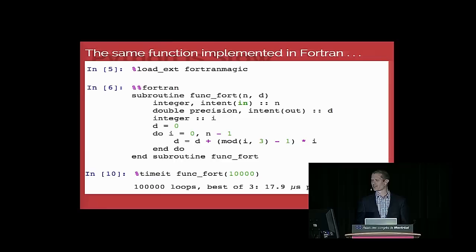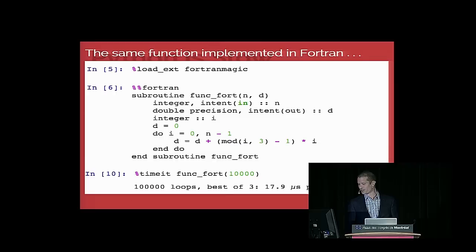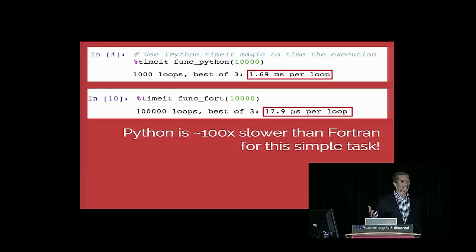If we instead implement the exact same function in Fortran — using the Fortran magic in IPython, which automatically produces a Python-wrapped Fortran function — and time it, we find that it completes in 17.9 microseconds. So Python is about a factor of 100 slower than Fortran when you're writing loops and doing little operations over and over. This is not a fluke; this is basically how it is whenever you're writing loops over data in Python.